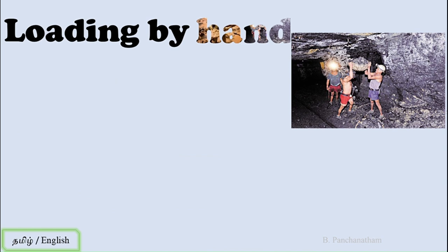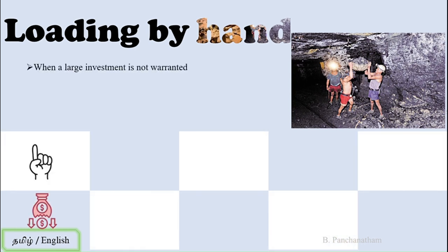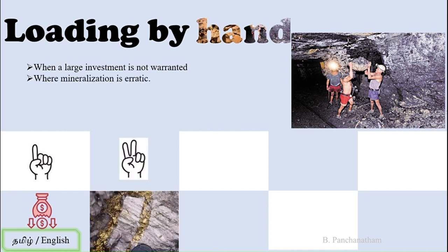In loading by hand, when the ore body is broken by blasting, machines, or human effort, you have to lift the ore material and transport it. For transportation they can use cableway, ropeway, or track, but lifting and loading the ore material from the surface requires humans. This is called loading by hand. It is used when a larger investment is not warranted, and when mineralization is erratic — only humans can differentiate mineral deposit from overburden or gangue and separate it in the field.